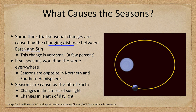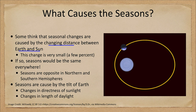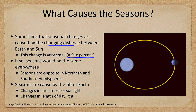We see here an elliptical orbit, which is what the Earth has. However, this is greatly exaggerated. The Earth's orbit is almost a perfect circle. There is a very slight change, but it's only a few percent, and there would be no significant seasons if the cause were simply due to this changing distance.